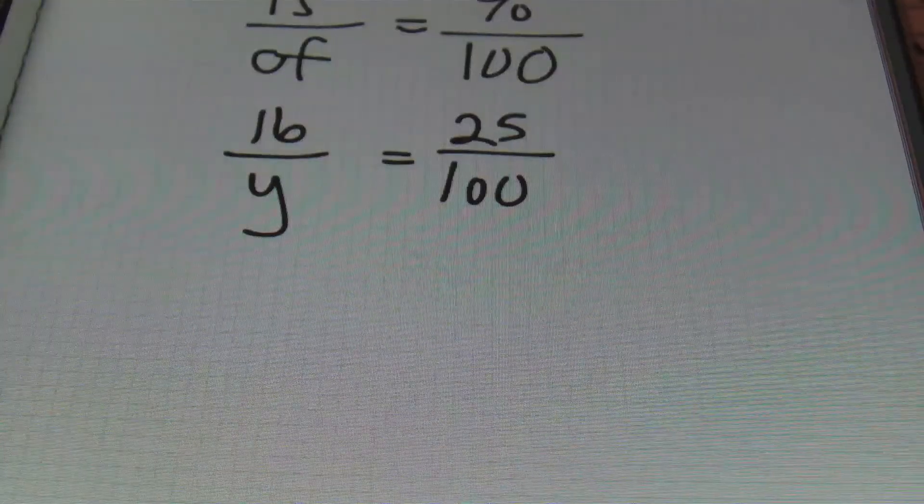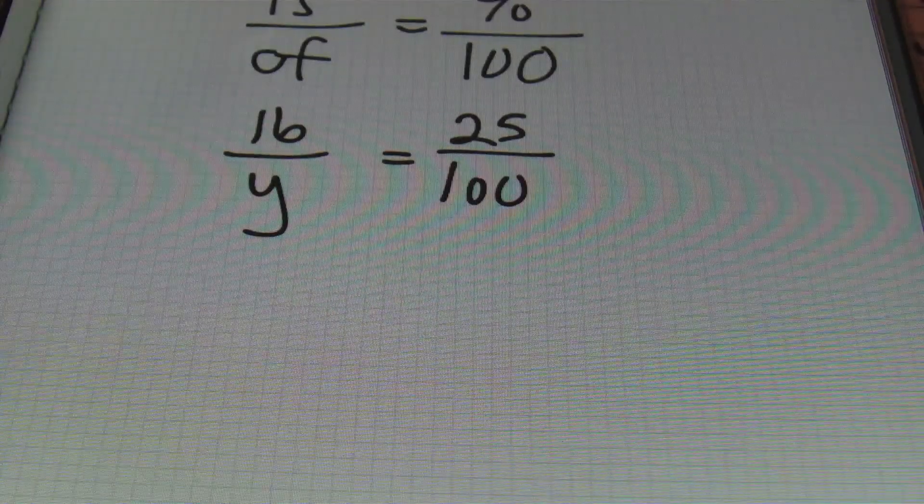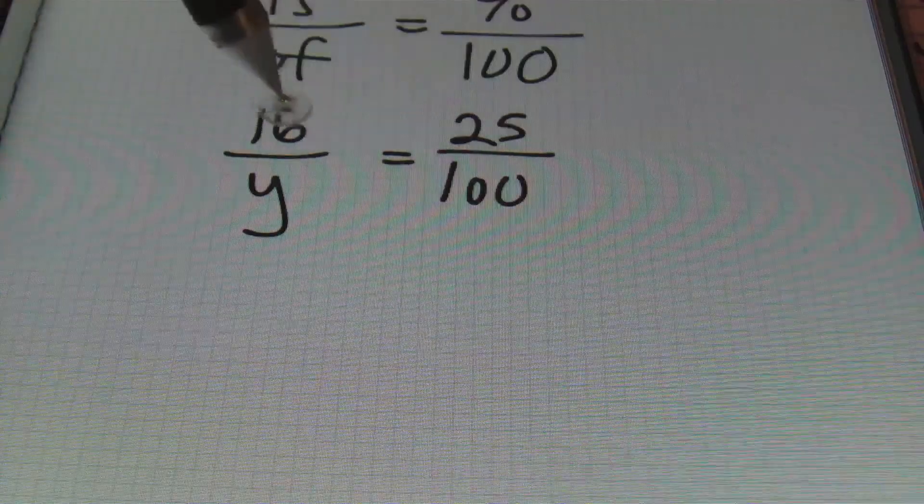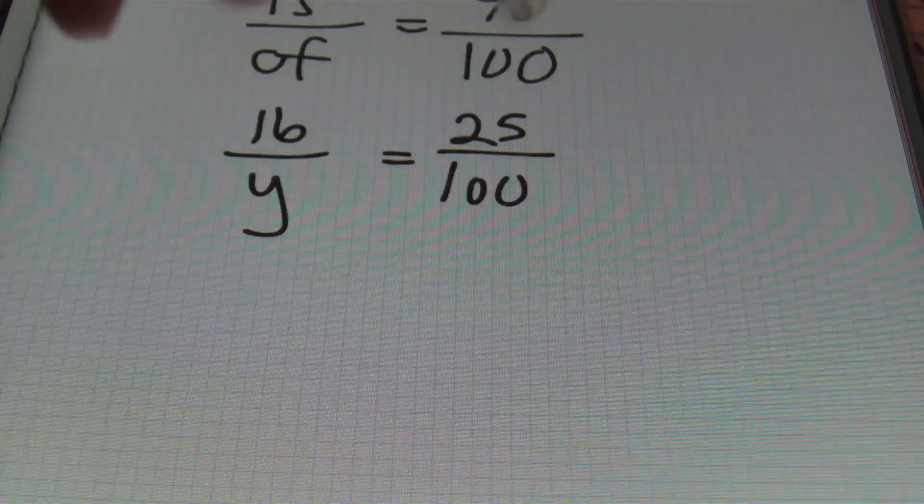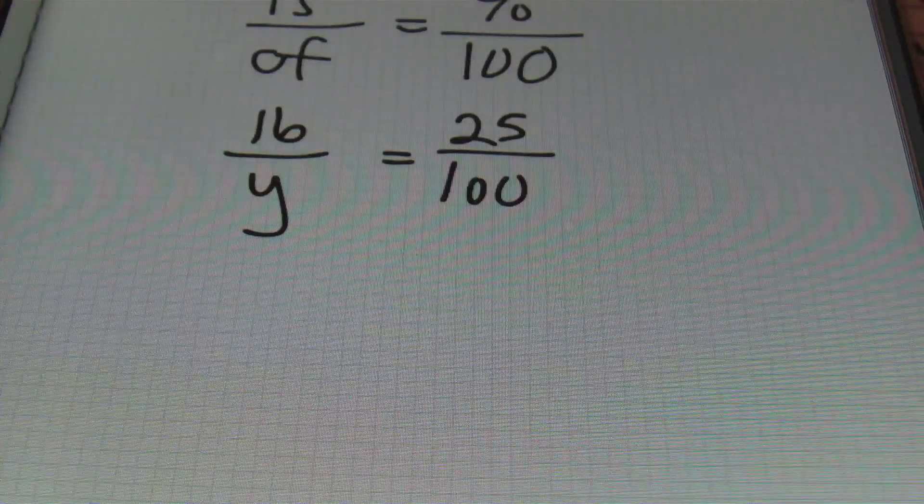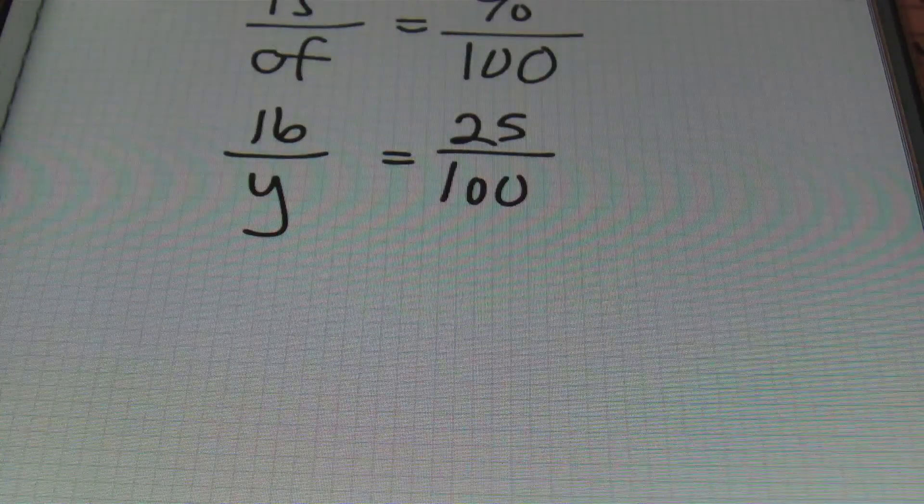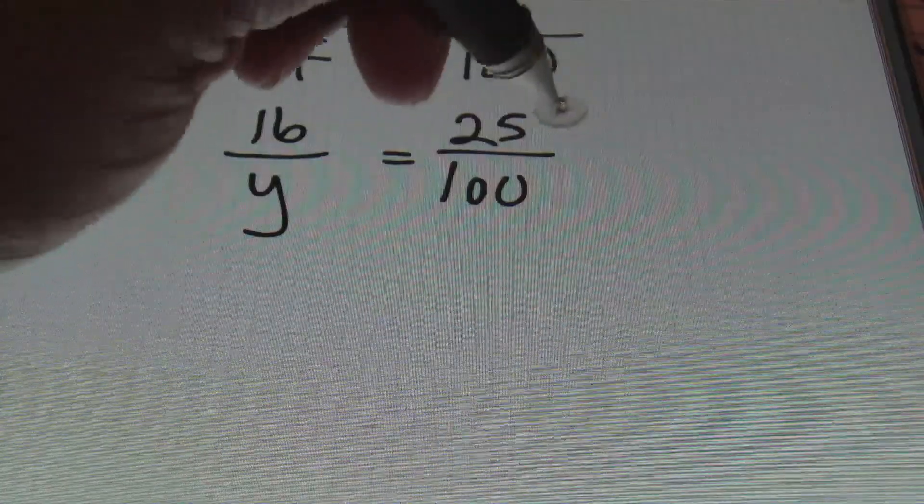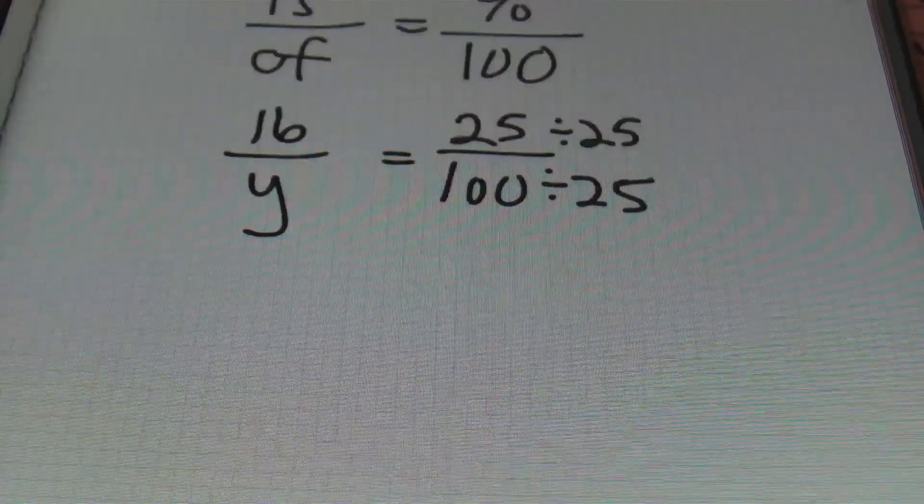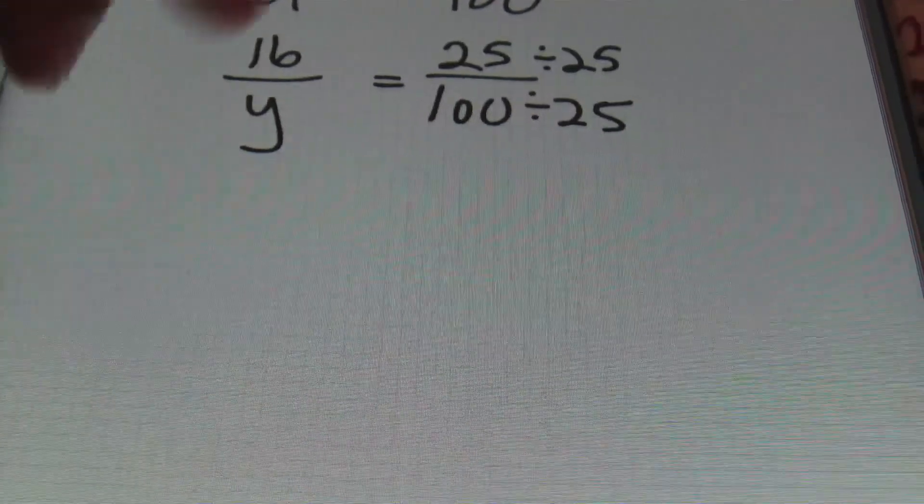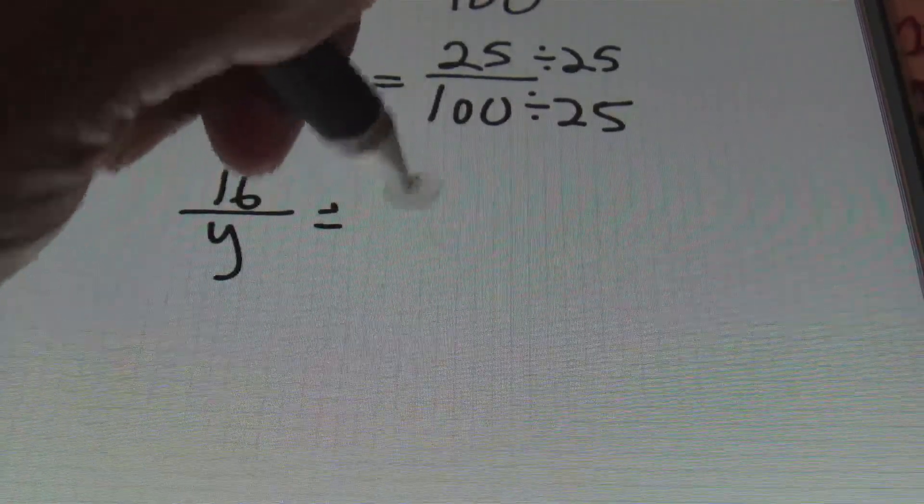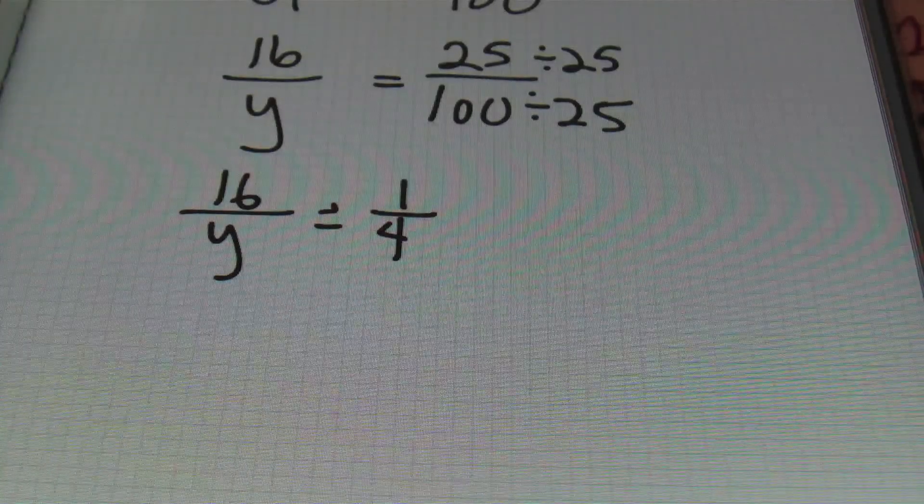And once again, ladies and gentlemen, as long as you're on one side of the equal sign, you can simplify this. You can't simplify straight across when you're cross-multiplying - never do that. But if you're only on one side of the equal sign, you can reduce that fraction. So the 25 over 100, I'm reducing this by 25. Why deal with big numbers if I don't have to? So I'm going to rewrite this as 16 over y equals 1/4.